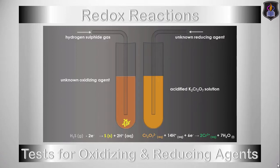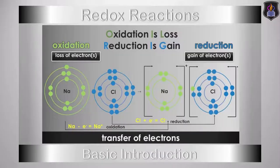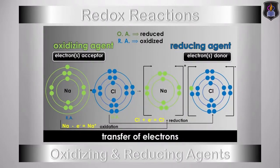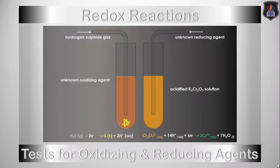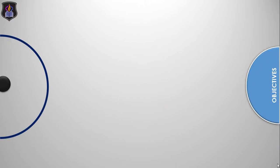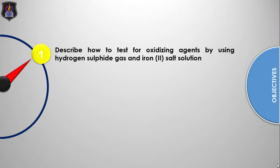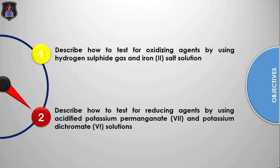If you are yet to watch the first two parts of the series — the basic introductions and how to identify oxidizing and reducing agents in Redox Reactions — just click on their links in the description below. By the end of this lesson, you should be able to describe how to test for oxidizing agents by using hydrogen sulfide gas and an iron-2 salt solution, and also describe how to test for reducing agents by using acidified potassium permanganate-7 and potassium dichromate-6 solutions.